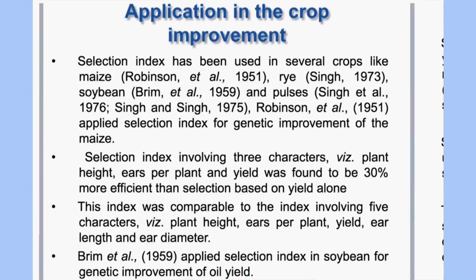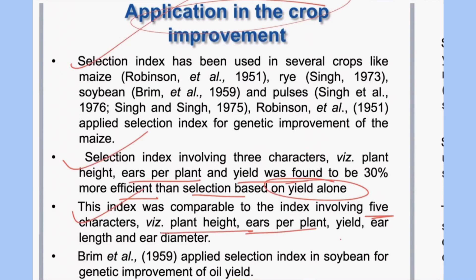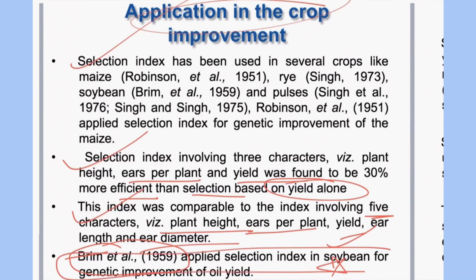Applications of selection index in crop improvement: selection index involving three characters — plant height, ears per plant, and yield — was found 30 percent more efficient than selection based on yield alone. This index was comparable to an index involving five characters: plant height, ears per plant, yield, ear length, and ear diameter. Brim and co-workers in 1959 applied selection index in soybean for genetic improvement of oil yield — an important fact asked in ICAR SRF and ICAR NET exams.